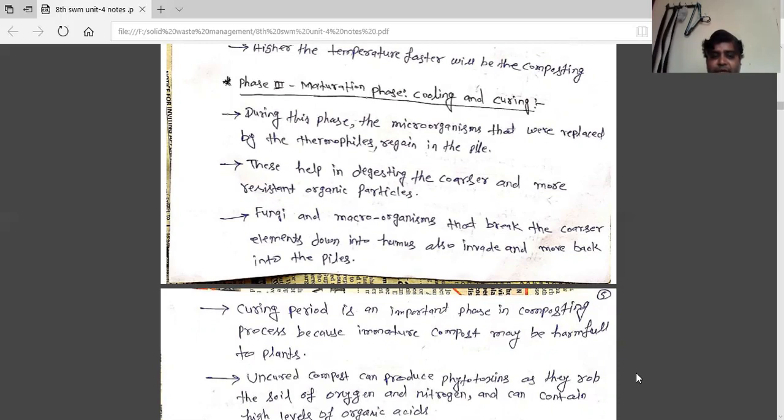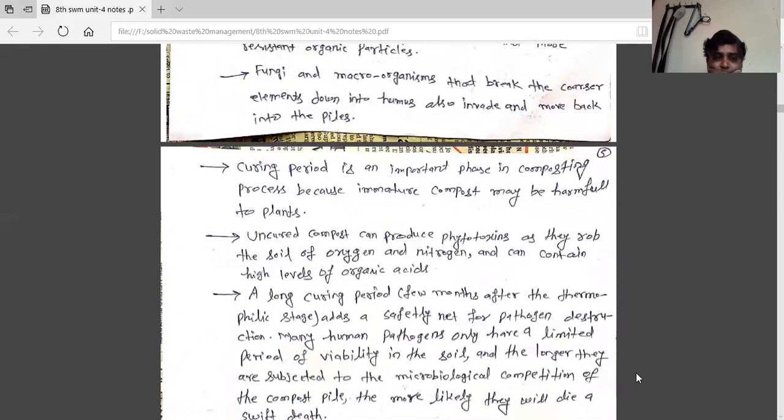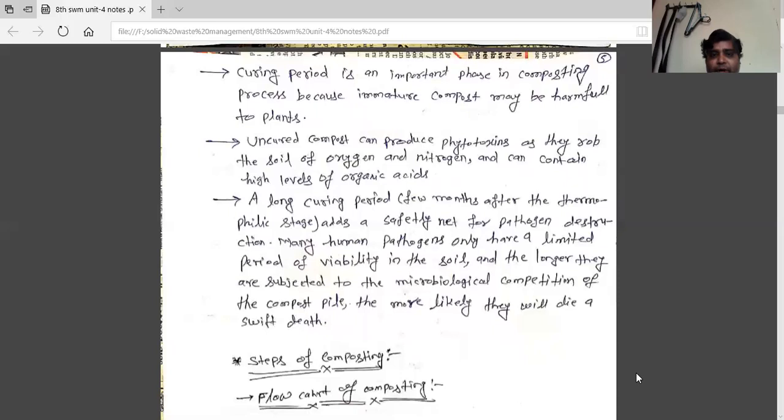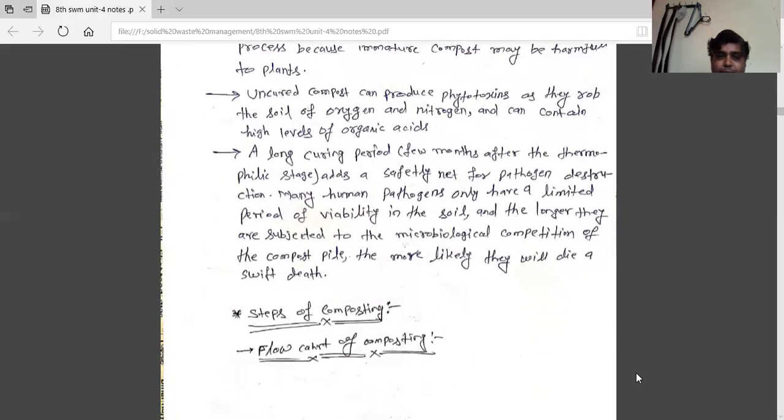The curing period is an important phase in the composting process because immature compost may be harmful to plants. Uncured compost can produce pathogens as they rob the soil of oxygen and nitrogen and can contain high levels of organic acids. A long curing period of few months after the thermophilic stage acts as a safety net for pathogen destruction. Many human pathogens only have a limited period of viability in the soil, and the longer they are subjected to the microbial competition of the compost pile, the more likely they will die a swift death.